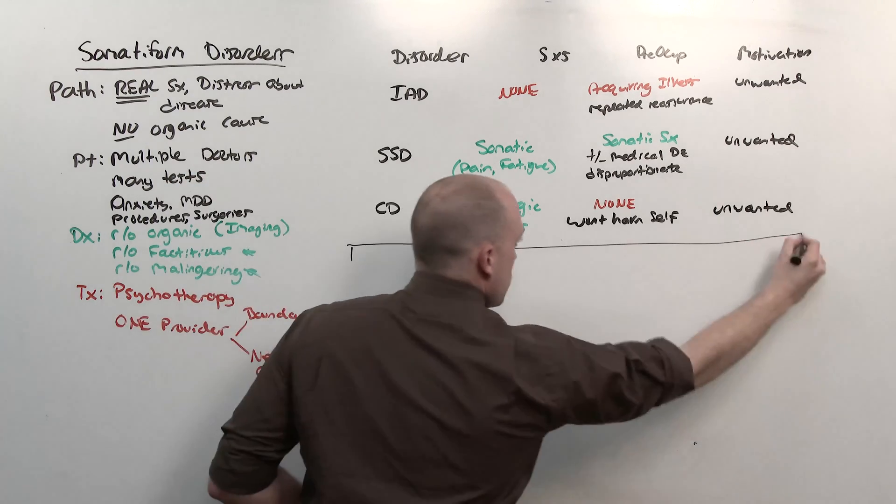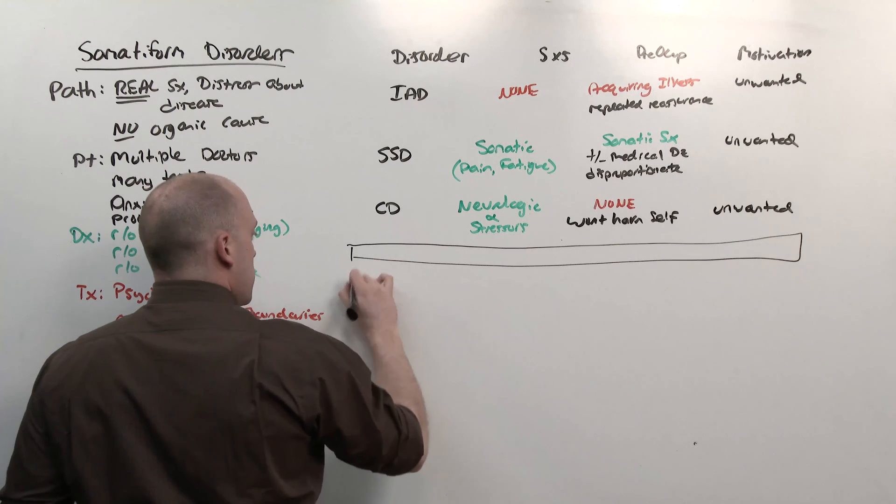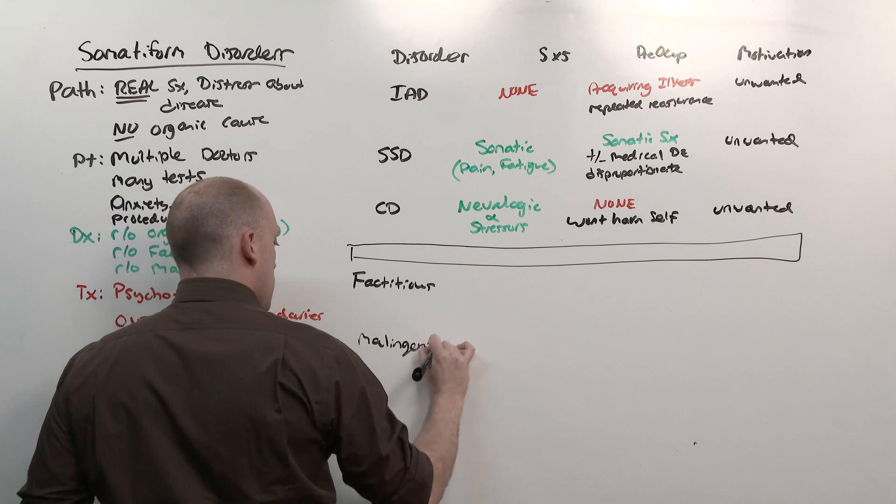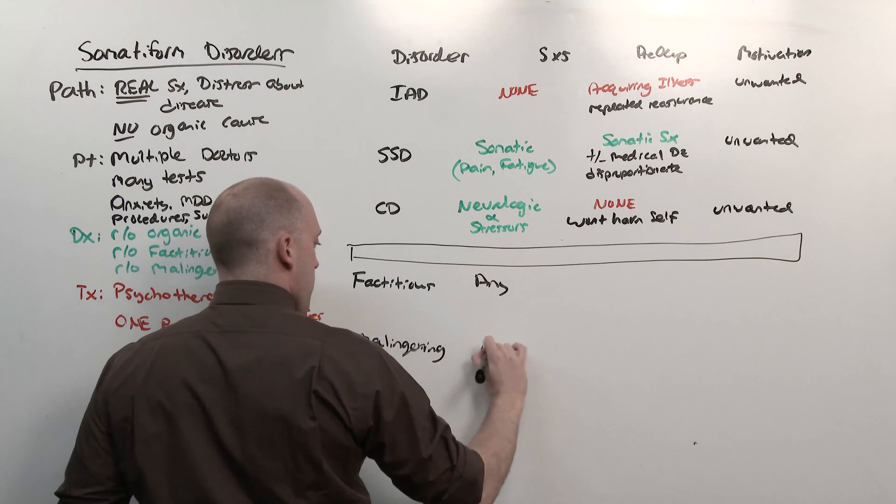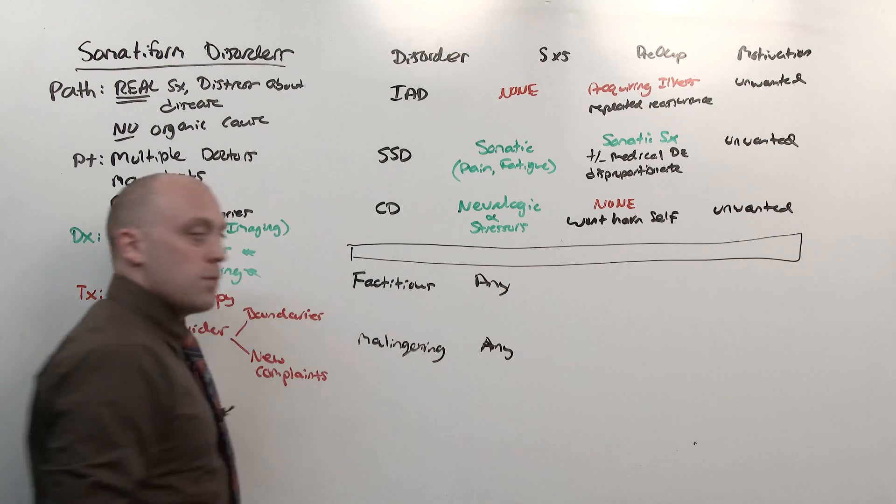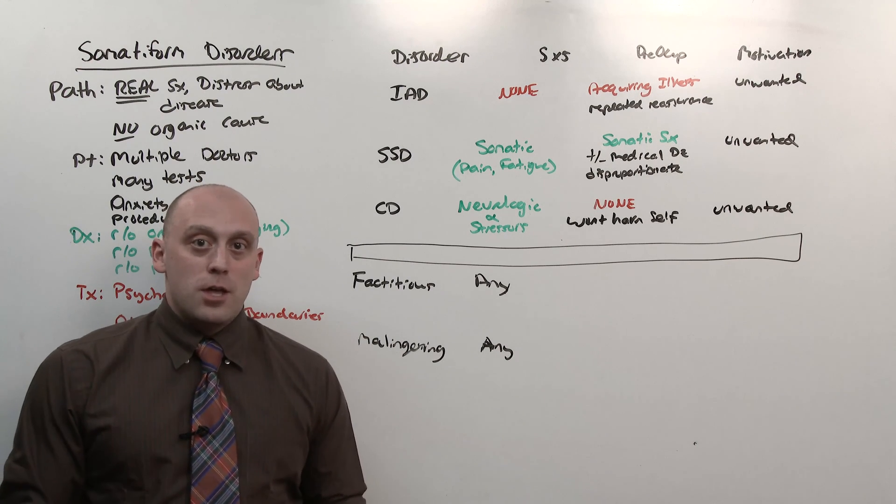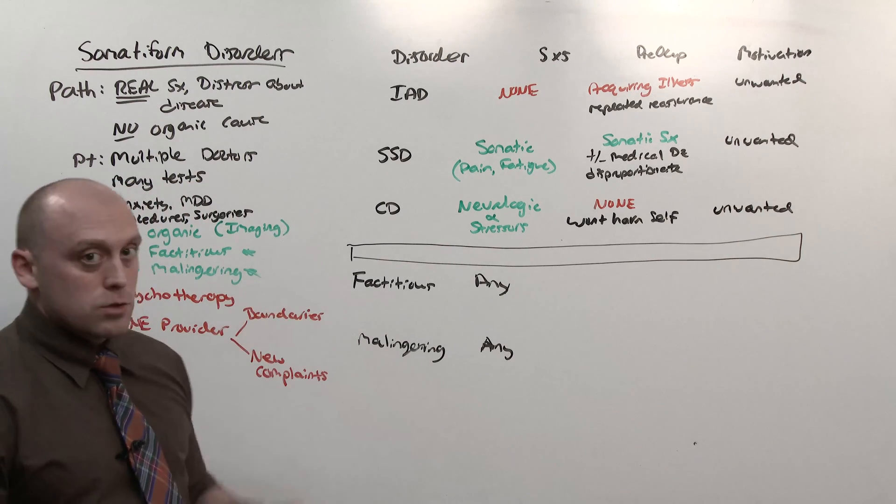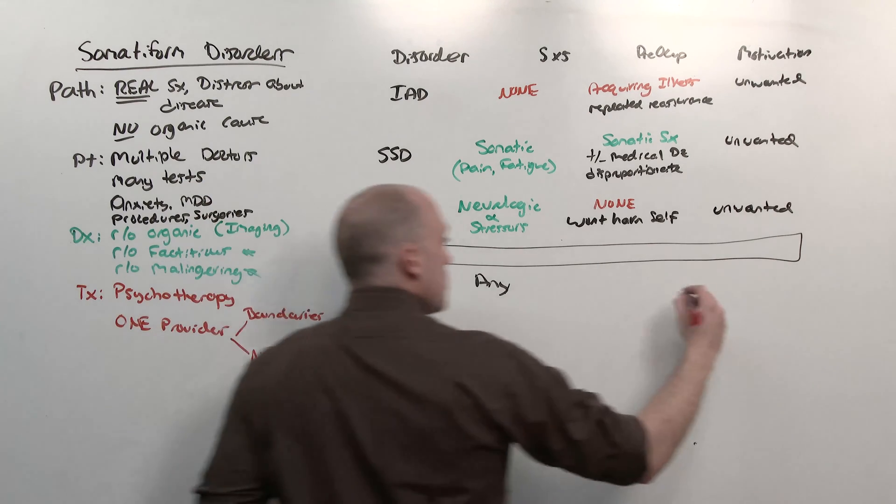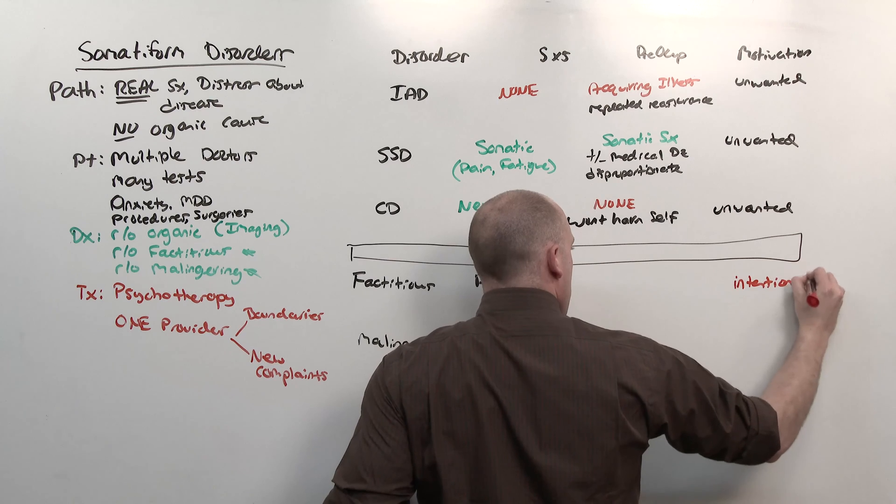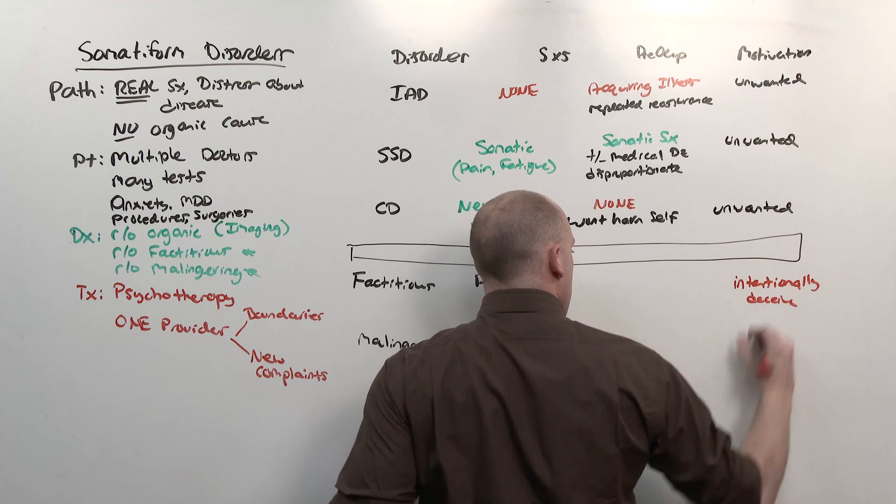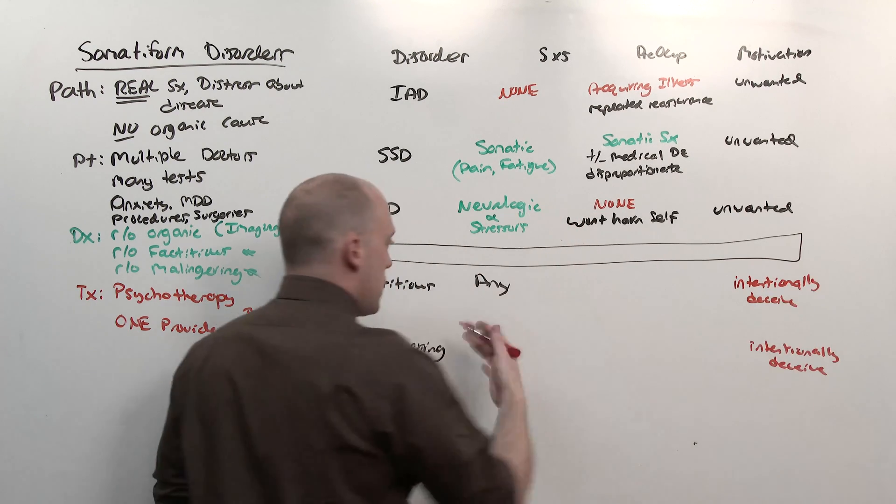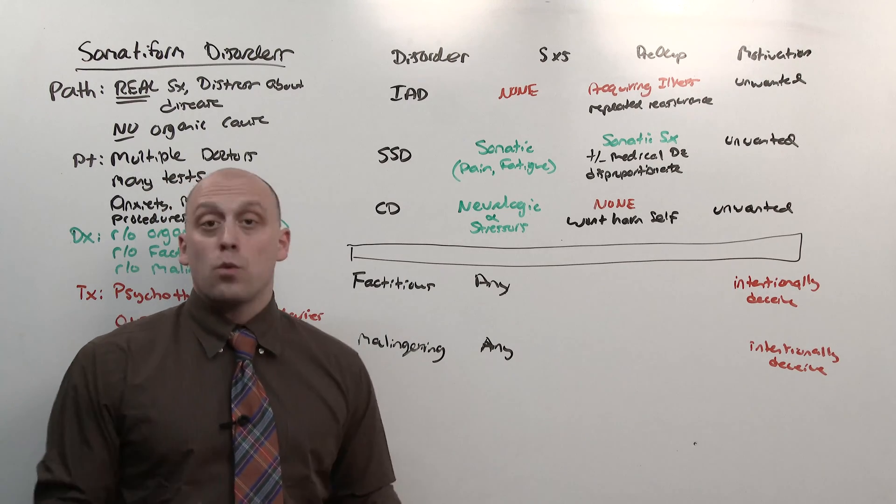The final two diseases, and I'm putting a big bar here to separate these three from the next two, are factitious and malingering. These can have any symptoms. If you eat a battery, you're going to be suffering from battery acid damage. If you inject fecal matter into an IV, you're going to have septicemia. The thing is that with both, factitious and malingering, unlike the true somatoform disorders, factitious and malingering are done intentionally, with intent to deceive. And since it's done intentionally with an attempt to deceive, it can come up with anything, psychiatric complaint, a somatic complaint, neurologic, whatever the case may be, they're faking it.